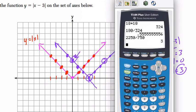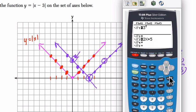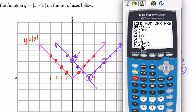What I would do is go to y equals. I would clear off any old functions. Clear, enter, clear, enter. I'm going to go to function 1. I'm going to hit math. Go to number. Absolute value is right there.